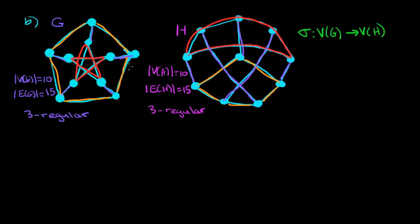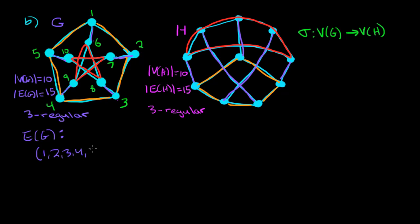Let me label the vertices of graph G. I'll label the outer five-cycle vertices 1, 2, 3, 4, 5, and the inner vertices 6, 7, 8, 9, 10. The edge set of G consists of a couple of cycles. The first is the cycle (1, 2, 3, 4, 5), meaning edges 12, 23, 34, 45, and 51. The second inner cycle is not 6, 7, 8 — it goes 6, 8, 10, 7, 9 and back to 6. So that's the other five-cycle.